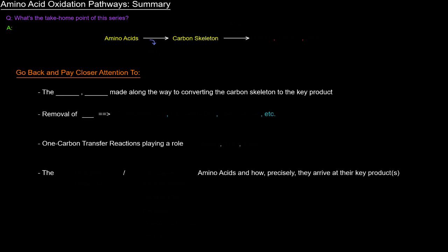So what's the take-home point of this series on the pathways of amino acid oxidation? It's really that we can get energy out of breaking down amino acids, and the way we do that is by first removing the nitrogen as an ammonium ion, and that'll make its way to the urea cycle to be removed or excreted safely as urea.